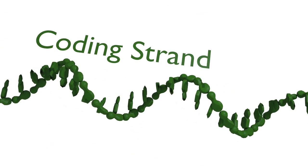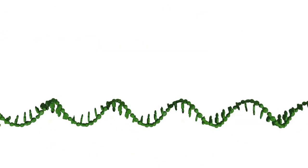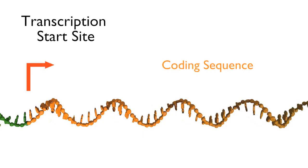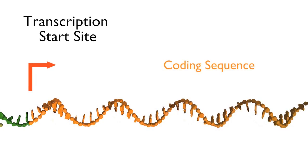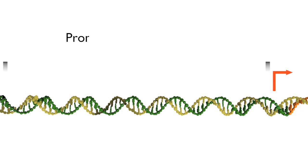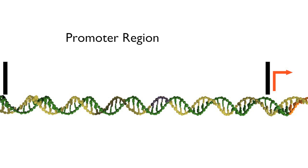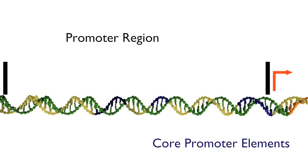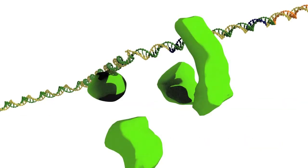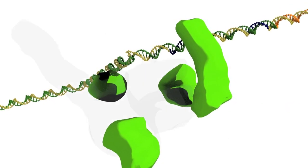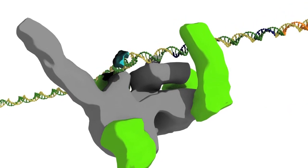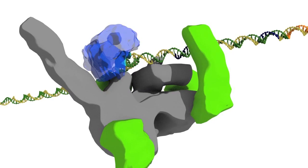The start of the coding sequence is known as the transcription start site. To the 5' side of this site is the promoter region. The promoter region contains particular DNA sites known as core promoter elements, which are important in the assembly of the complex of proteins needed to initiate transcription.